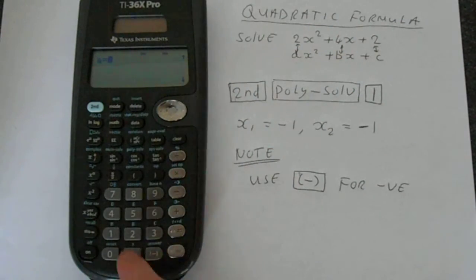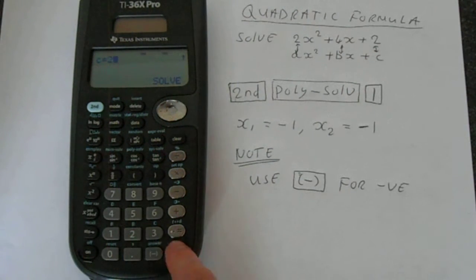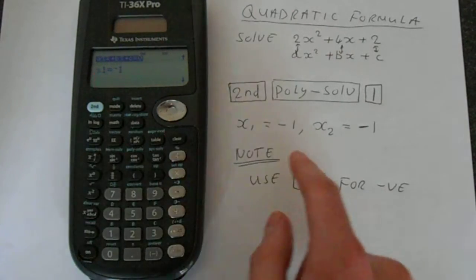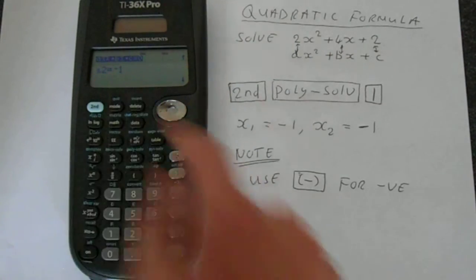So we're going to edit a, b and c. We're going to go 2, then we're going to go 4, and then we've got 2 on the end. Then press enter again on solve and it will solve it for you. This gives two solutions which is x1 equals minus 1 and x2 is minus 2.